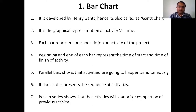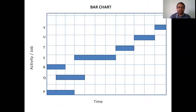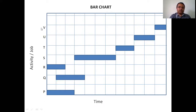First of all we'll go for the bar chart. Before going to the introduction, I will show the bar chart. So this is the bar chart. A bar chart means you will show the job or activity along the Y axis and you will show the time along the X axis. So P, Q, R, S, T, U, V — these are the different activities.